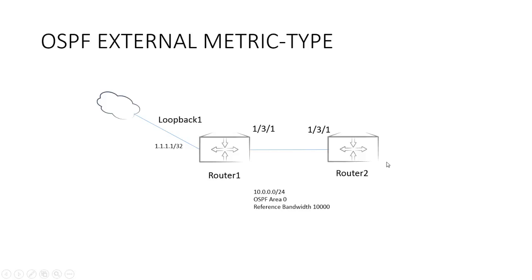Going back to the diagram — I have an exit to 1.1.1.1/32. If this was a subnet and I had another route out to that subnet from another router, if it was type 2, it wouldn't add the internal cost. Therefore it would be equal cost from either router, so it could use equal-cost multipath to get to that external destination. If I change it to type 1, it's going to use the external cost plus the internal. So the link directly connected would be the shortest path, and the other would be longer — external metric of 2 plus internal metric of 10 gives a metric of 12 versus a metric of 2. It would use the shortest path, as OSPF should.